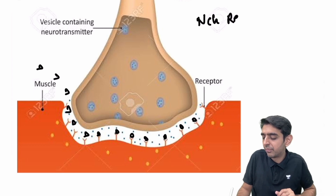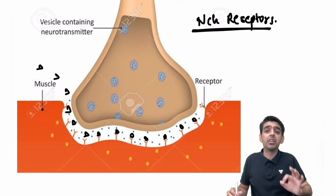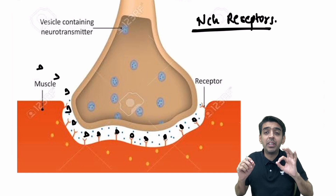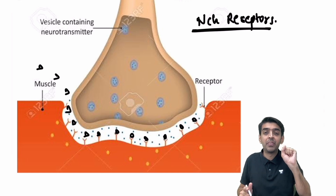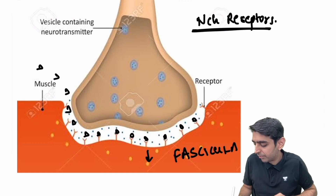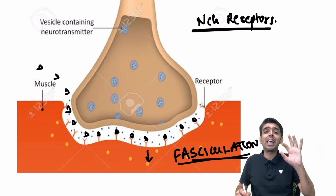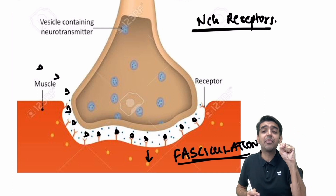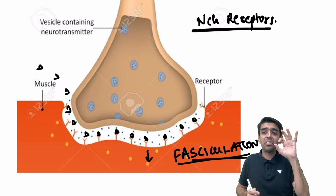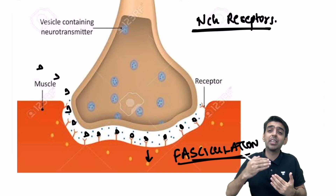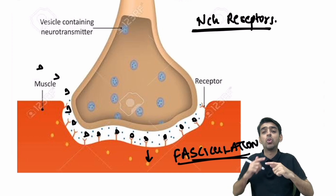Once succinylcholine binds to the nicotinic cholinergic receptors, it brings about a change in the receptors, but you will not get a complete action potential as you would with acetylcholine. Instead, there is asynchronous contraction and relaxation of the muscles, which is known as fasciculation. If I want to make a fist, all muscles must contract in sync, but succinylcholine causes some contraction that is asynchronous — not a complete synchronous contraction — hence fasciculation.